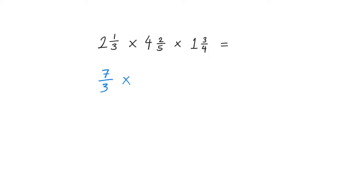The next one: 4 times 5 is 20, plus 2 is 22, so that becomes 22 over 5. And the last one: 1 times 4 is 4, plus 3 is 7, so that becomes 7 over 4.